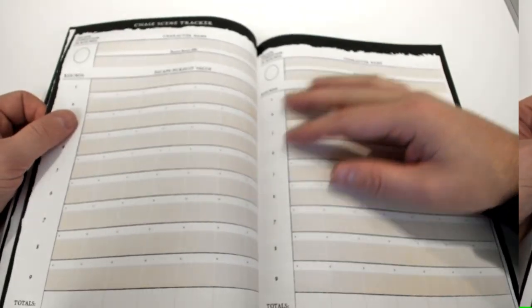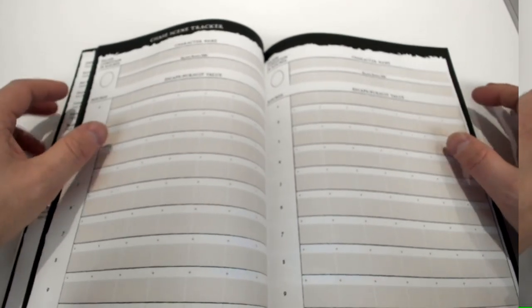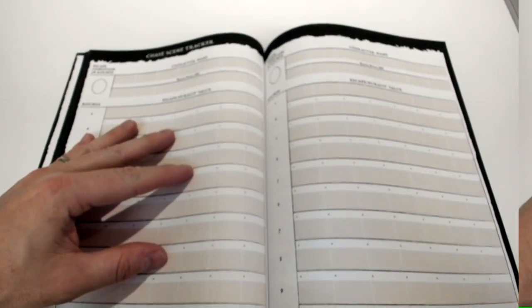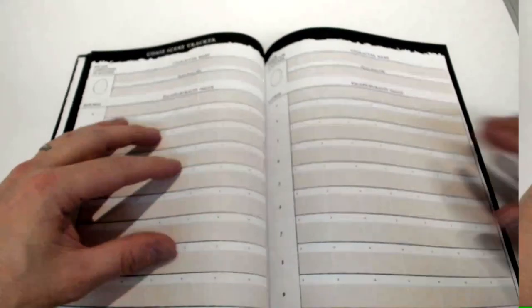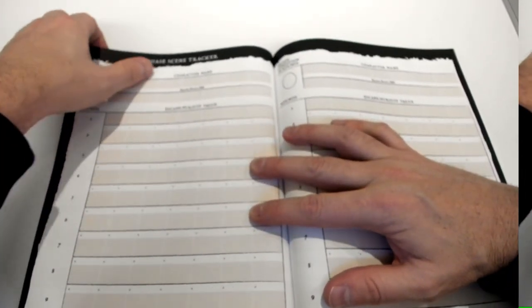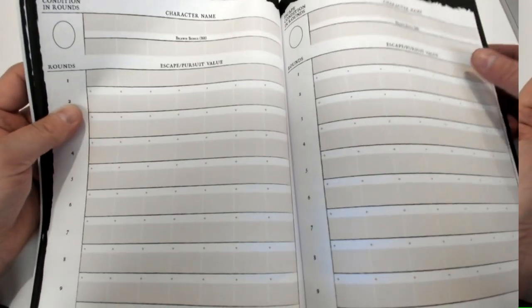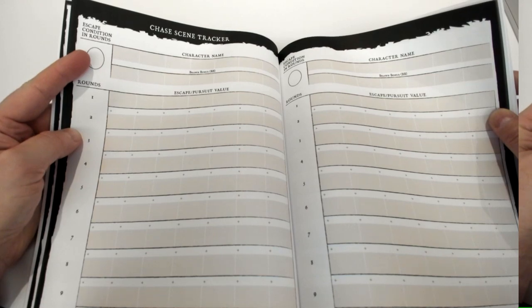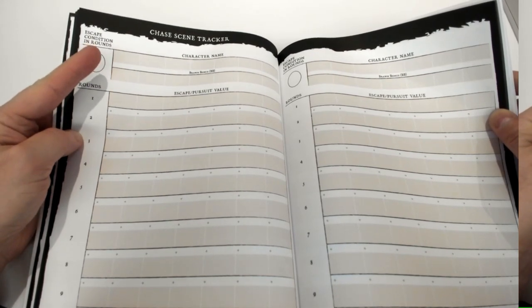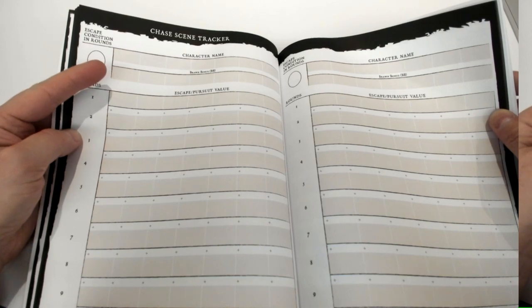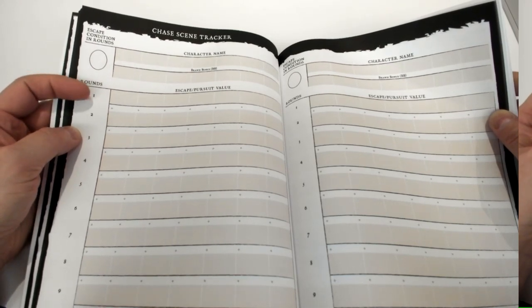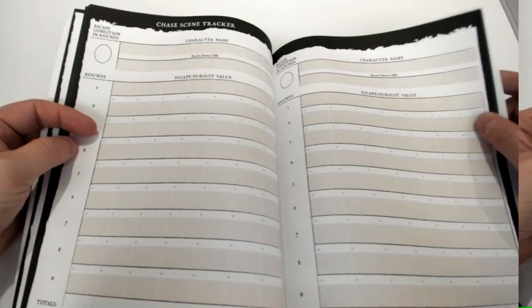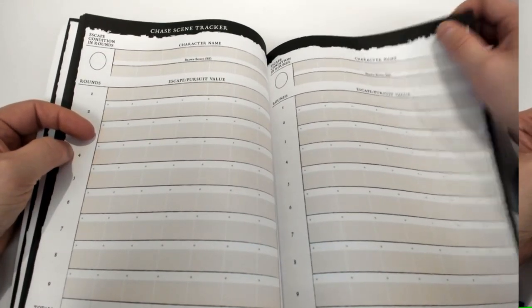Then we move on to the chase scene tracker, which is pretty neat. This is basically a way for you to track chase scenes. You have your escape condition - you put up here if it's three, six or nine. You write down all the character names at the top, including their brawn and brass because they could potentially gas out while they're chasing. Then you track the escape and pursuit values down here. I've even included four sheets to track chase scenes.